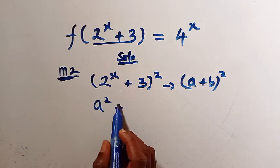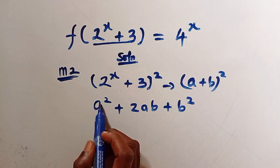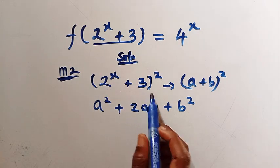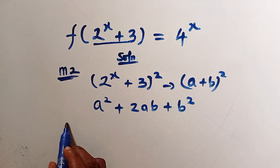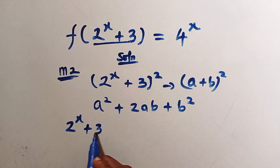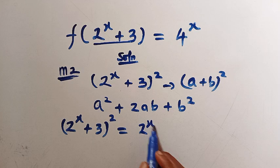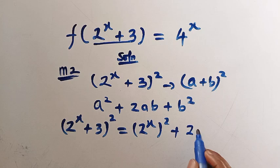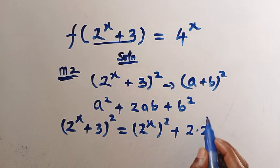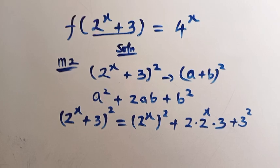We expand (a + b)² as a² + 2ab + b², where a = 2^x and b = 3. Resubstituting for (2^x + 3)², we get (2^x)² + 2 × 2^x × 3 + 3².